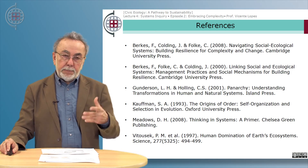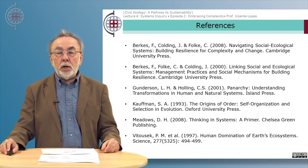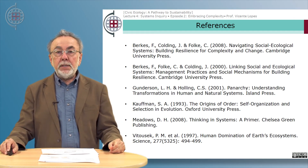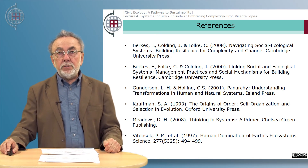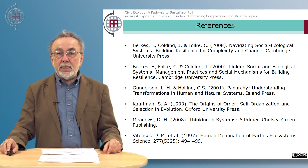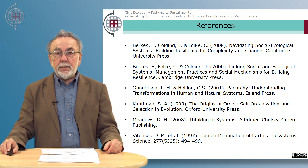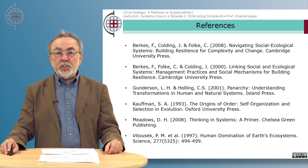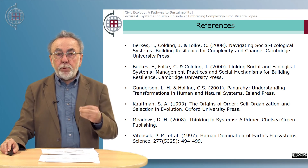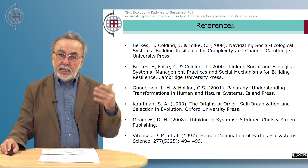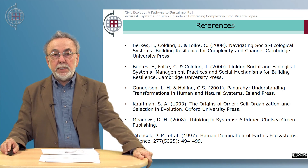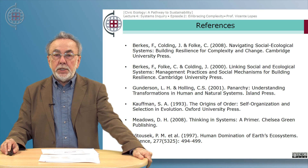Here is a list of important references to deepen your understanding of systems thinking and complex adaptive systems theory. The first two references by Berkes and collaborators deal with socio-ecological systems. The paper by Gunderson and Holling is a must-read if you want to understand the dynamics of coupled human and natural systems. Kauffman provides further insight into self-organization and evolution in complex systems. Meadows provides an important basic text on systems thinking. And the work by Peter Vitousek, the American ecologist, and his collaborators on assessing the state of the earth in the face of human domination is also mentioned. Thank you very much, and I'll see you next time.